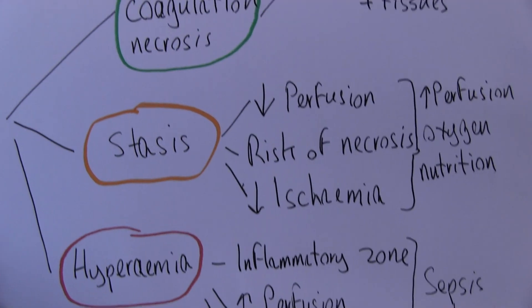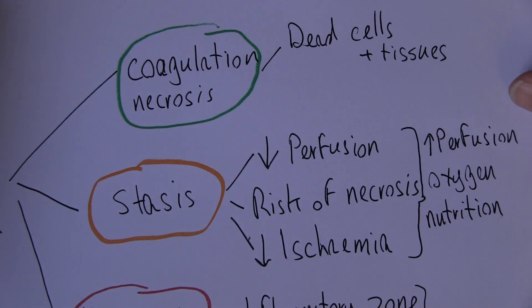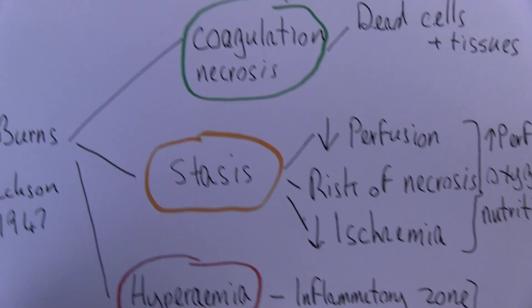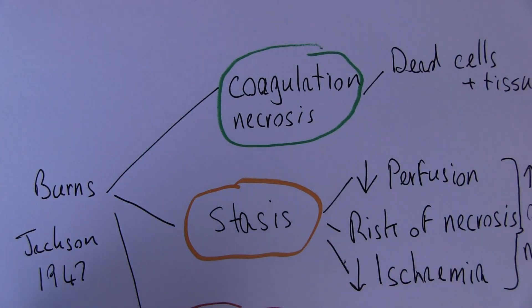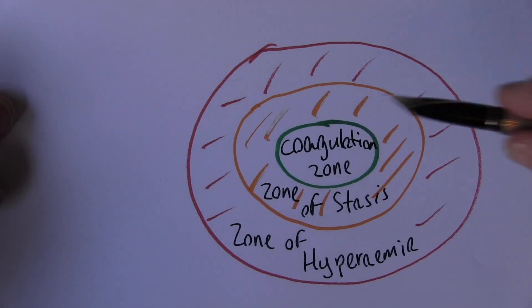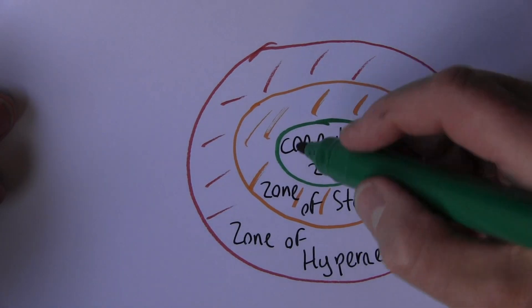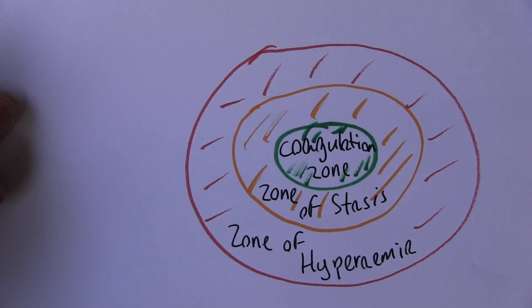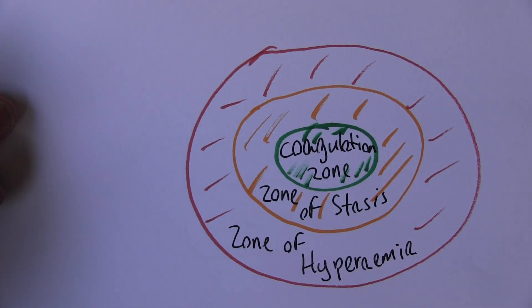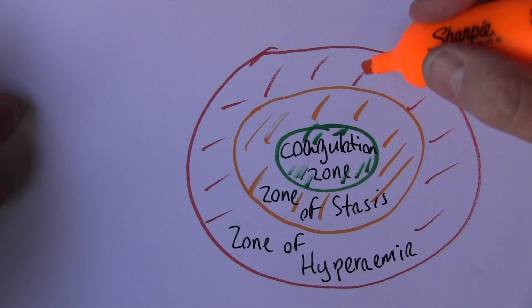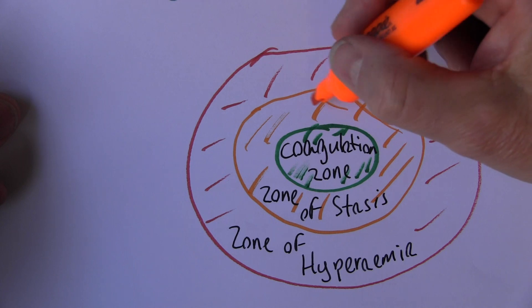So that's basically the Jackson model: the coagulation necrosis zone, the stasis zone, and the hyperemia zone. The reason it's so important is because although the coagulation zone is lost, we can't get that back, that's all dead, we can retain the integrity and the perfusion of the zone of stasis.